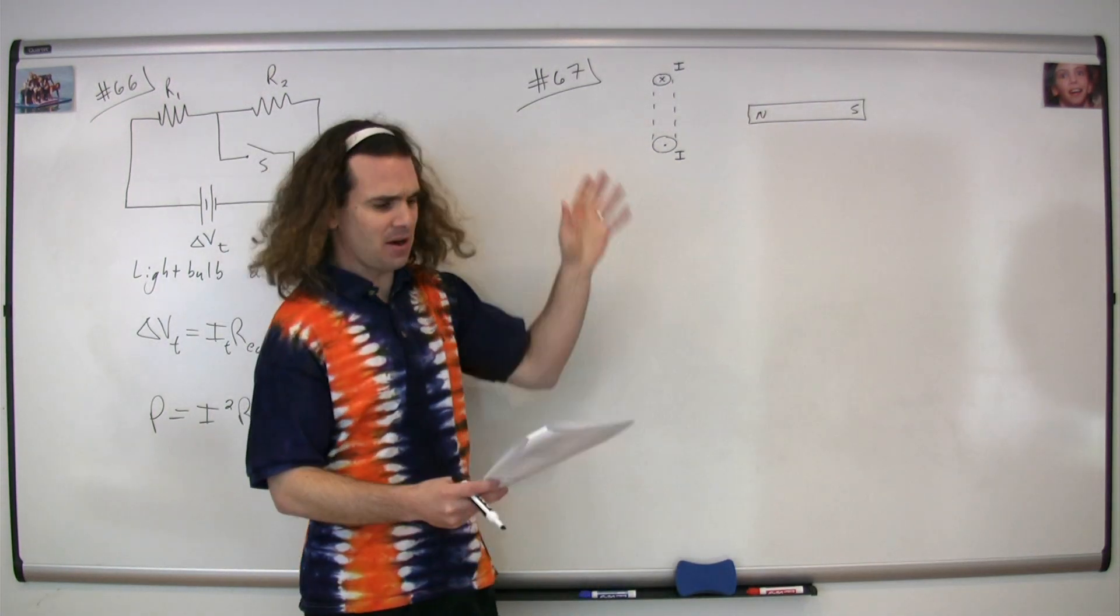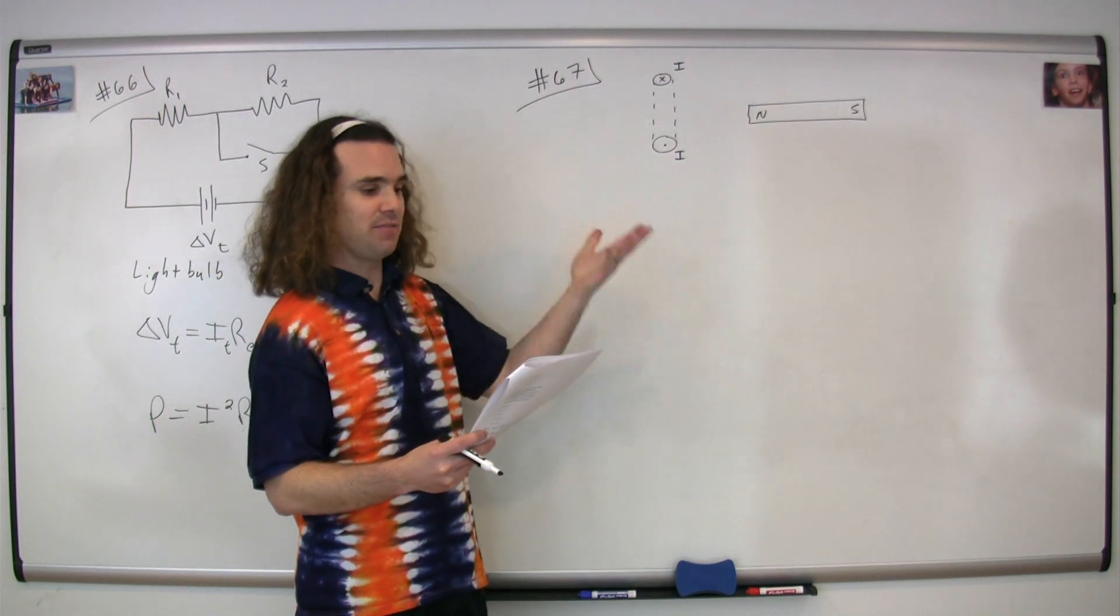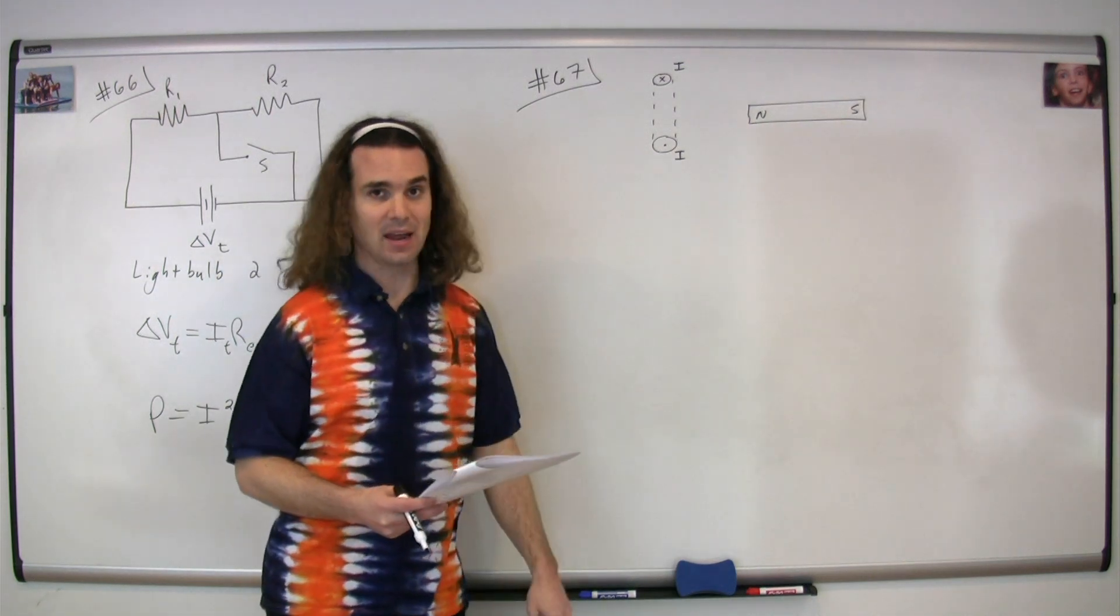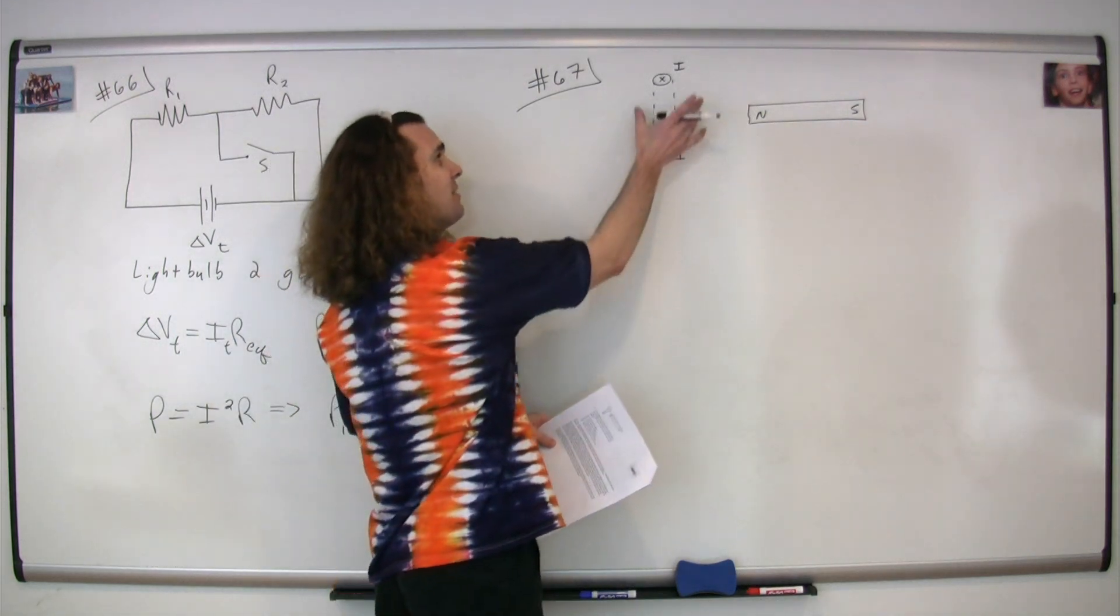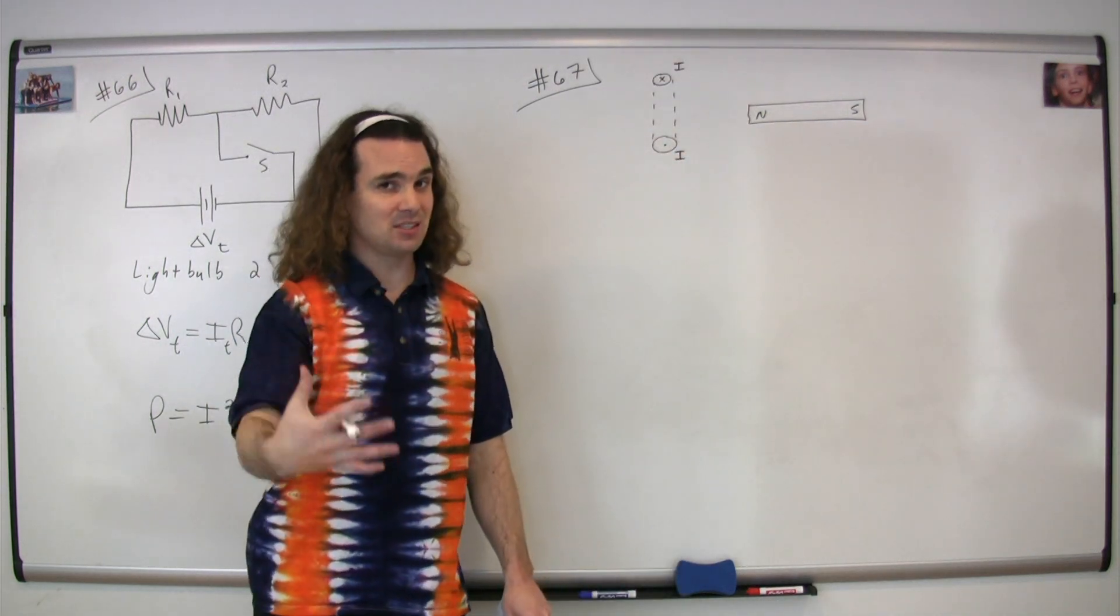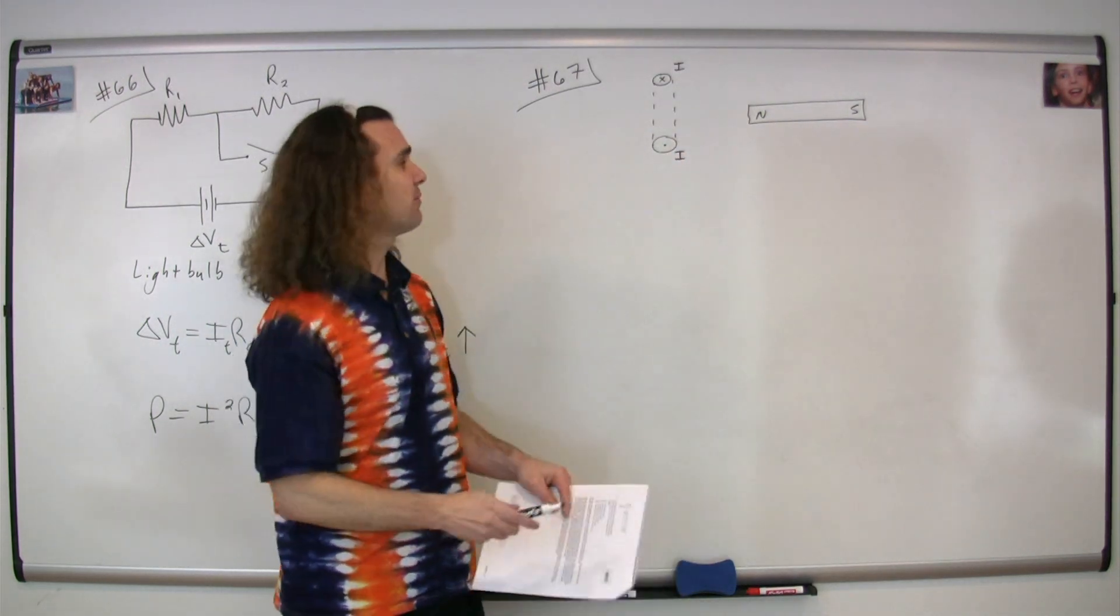Now, we're trying to figure out what the magnetic force, if any, on the current loop due to the magnetic field caused by this bar magnet. First, the reason I've drawn it this way is to better be able to see which direction the current is flowing.